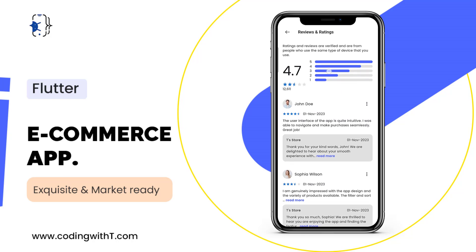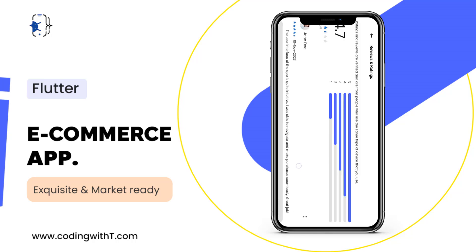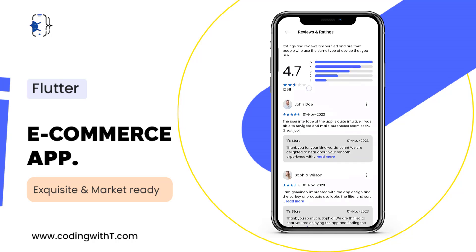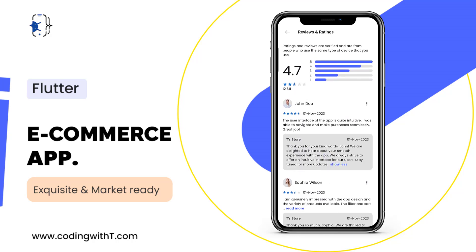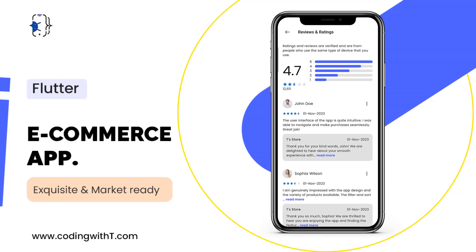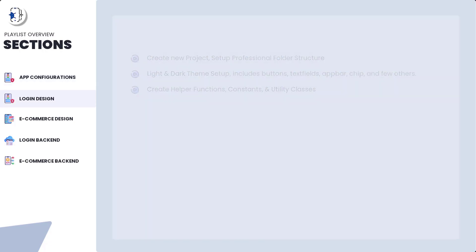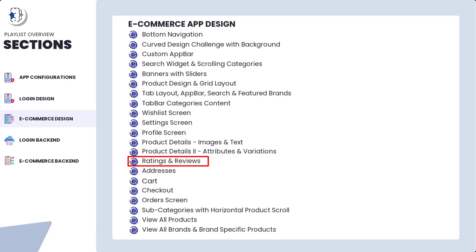This tutorial will be very informative — you'll learn about rows, columns, expanded, and flex properties to create adaptive designs. When the screen is rotated, our design remains responsive with all screens visible. We'll also cover individual reviews, overall rating, and a store reply with expandable text. We are building a complete Flutter e-commerce app UI, and today's tutorial covers the ratings and review screen.